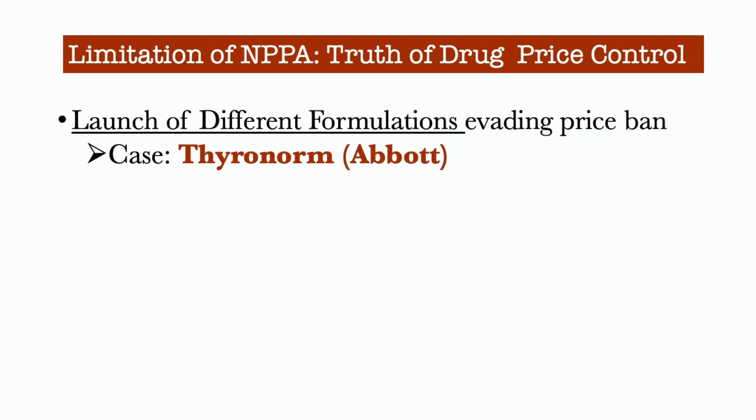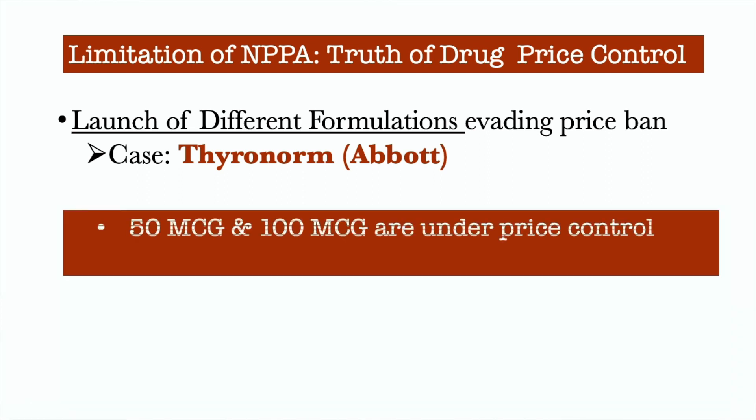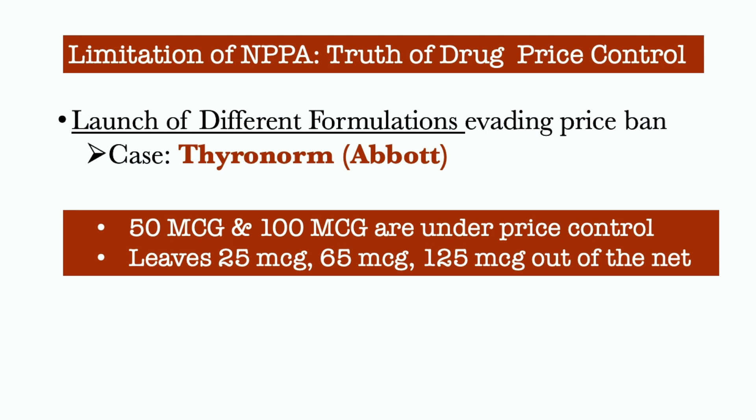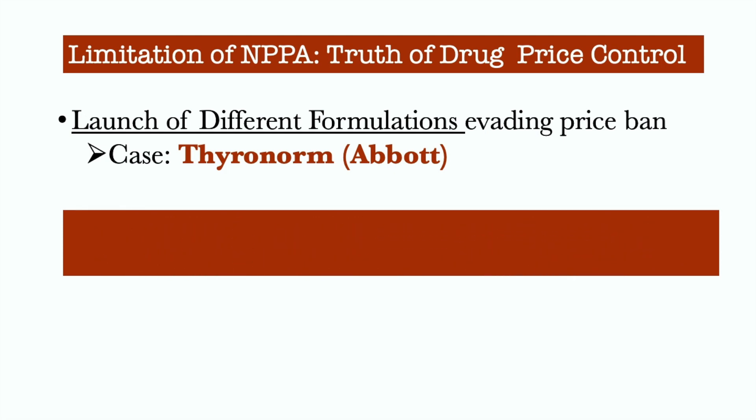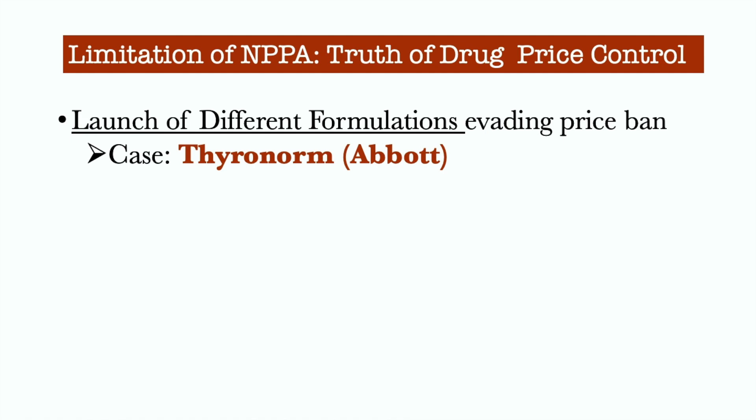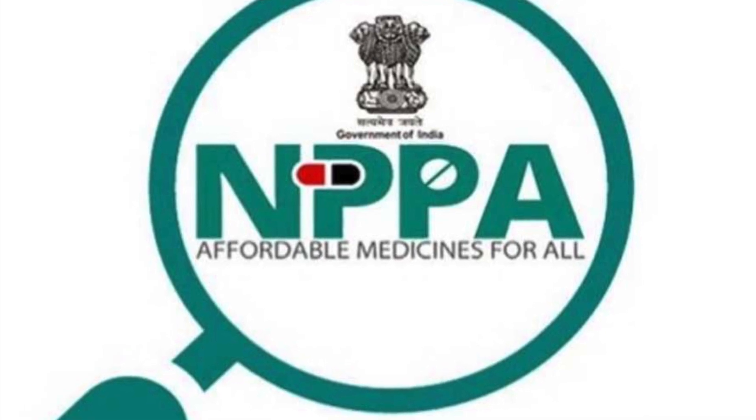For example, you have heard of Abbott Labs. Abbott Labs' highest-selling drug is called Thyronorm, and its molecule is Thyroxine Sodium — used for hypothyroidism treatment when people have low levels of thyroid hormone. Currently, Thyroxine Sodium at 50 MCG and 100 MCG doses are under price control. Other strengths — 12.5 MCG, 25, 62.5, 75, 88, and 150 MCG — are different formulations available in the market which are beyond price control. This is a clear example that although the drug is under price control, if you tweak the formulation, you come out of price control. So in India, NPPA is not that powerful.